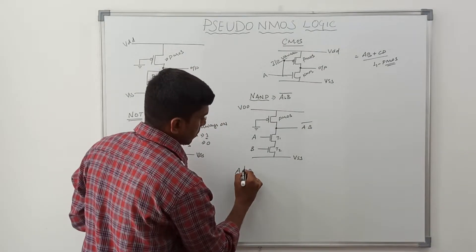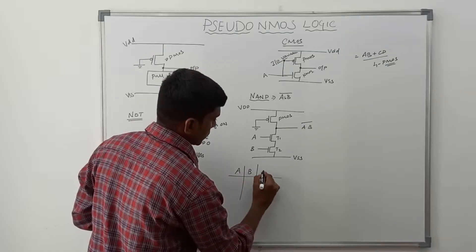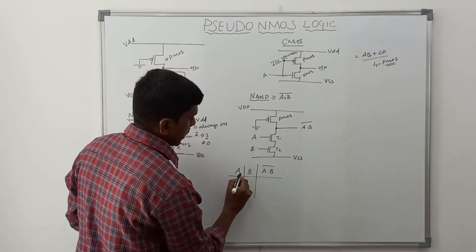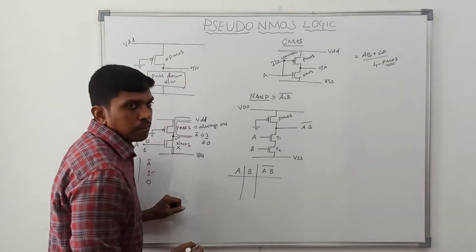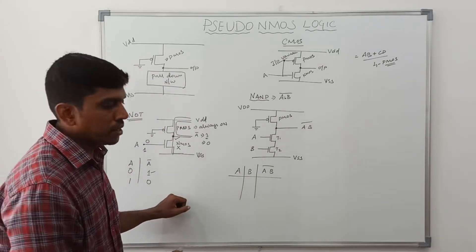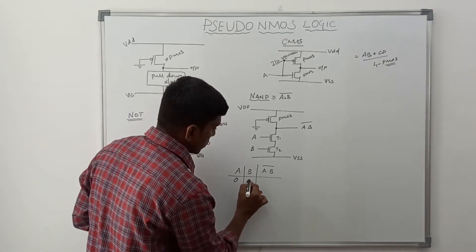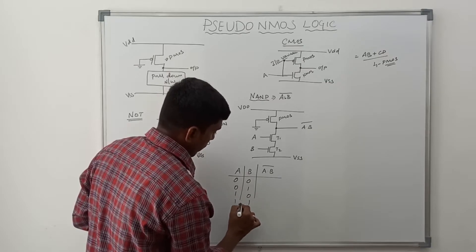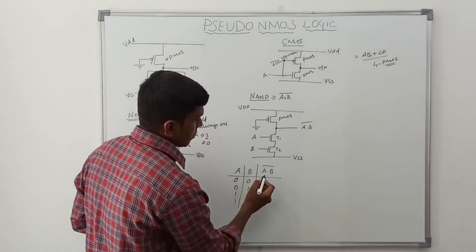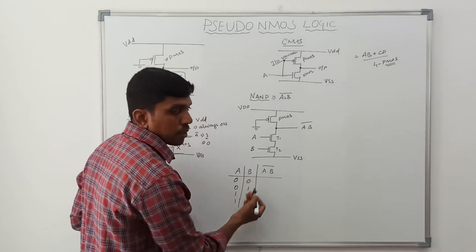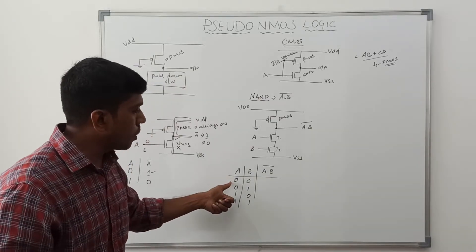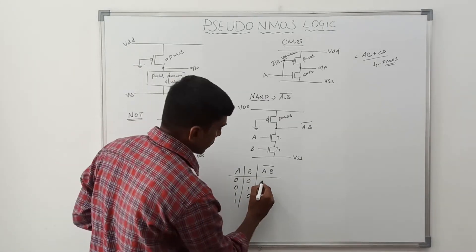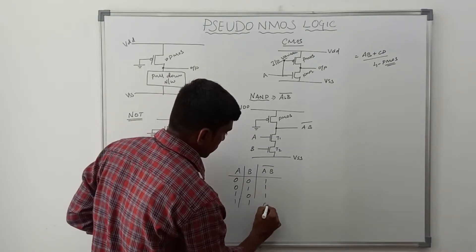The NAND gate truth table has 2 variables making 4 combinations of input: A=0,B=0; A=0,B=1; A=1,B=0; A=1,B=1. The property of a NAND gate is: if any one input is 0, the corresponding output is 1. So the outputs are: 1, 1, 1, 0.